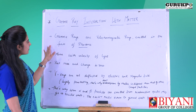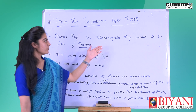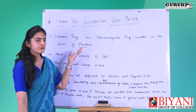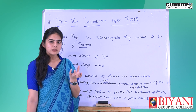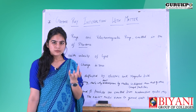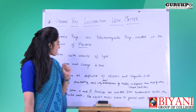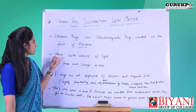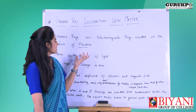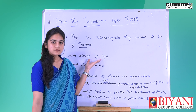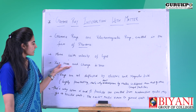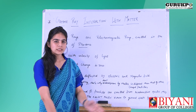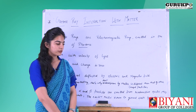Gamma rays are electromagnetic rays emitted in the form of photons. Photons are a small package of energy. Gamma rays move with the velocity of light, and the rest mass and charge on gamma rays is zero.